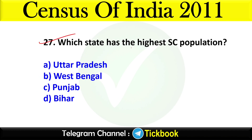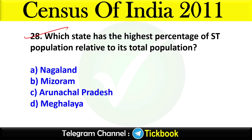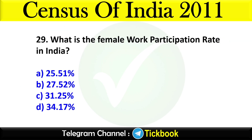Question twenty-seven: Which state has the highest SC population? Option number A is the right answer: Uttar Pradesh. Question twenty-eight: Which state has the highest percentage of ST population relative to its total population? Remember, all questions are based on Census 2011. Option number B is the right answer: Mizoram. Question twenty-nine: What is the female work participation rate in India as per Census 2011? Option number A is the right answer: 25.51 percent.